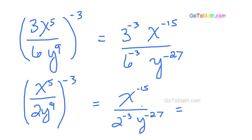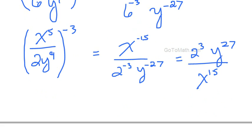So we want to write with positive exponents, and that means that we're going to be switching places here. So we're going to have 2 to the 3rd up in the numerator, y to the 27th. We'll simplify that down here shortly. And then x to the 15th. Just switch places so we all have positive exponents.